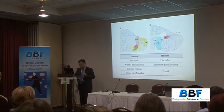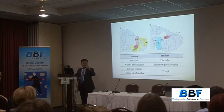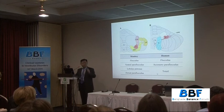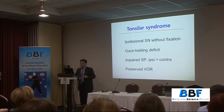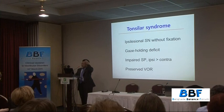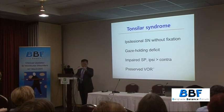The tonsil in humans corresponds to the lobulus petrosus and the paraflocculus in monkeys. There is still some unclear delineation between the flocculus, paraflocculus, and tonsil, but this is based on consensus with specialists. In tonsillar infarction, you can see ipsilesional spontaneous nystagmus and gaze-evoked nystagmus. The most conspicuous finding is impaired smooth pursuit, while in contrast the vestibulo-ocular reflex is preserved.